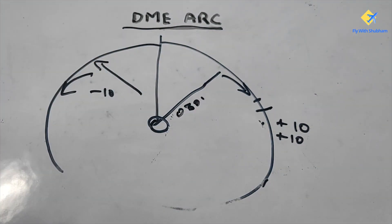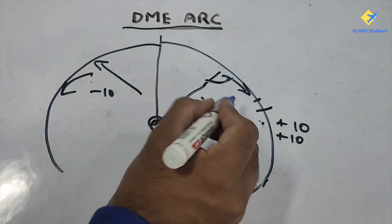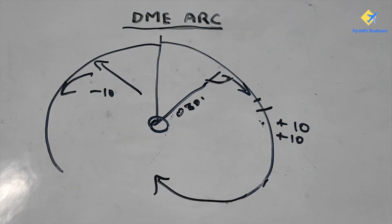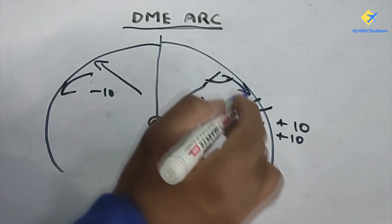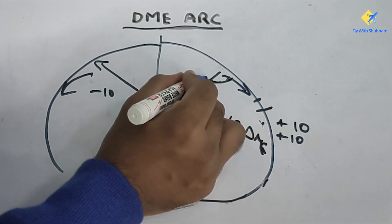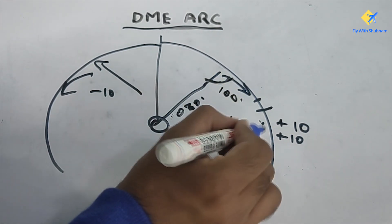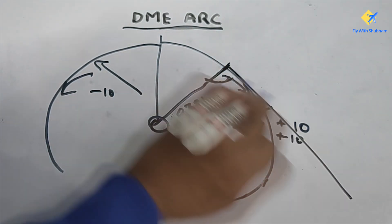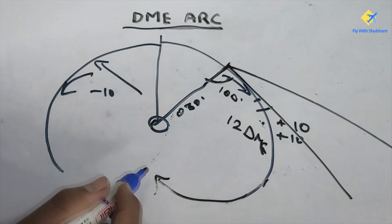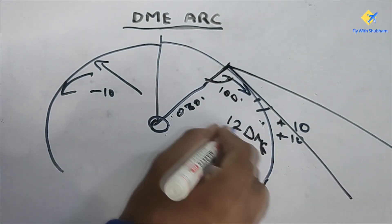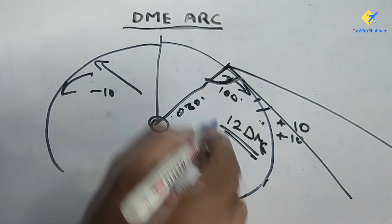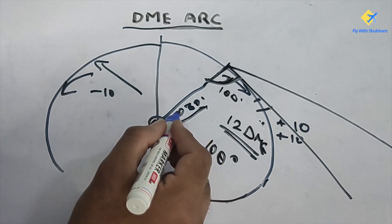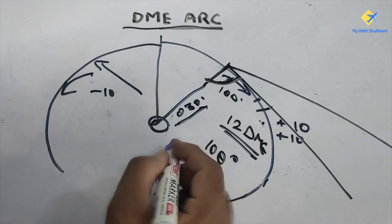One thing to keep in mind for the outbound DME is the angle you turn to re-intercept toward the station. To maintain the 12 DME arc you need to turn 100 degrees. If you turn only 90 degrees you will be going outbound, and if you turn 80 degrees you will drift even further from the station. So to stay within the DME arc you turn a total of 100 degrees from your current heading. If you are going outbound on heading 030, your new heading will be 030 plus 100, which is 130.